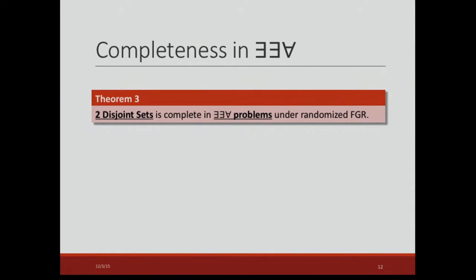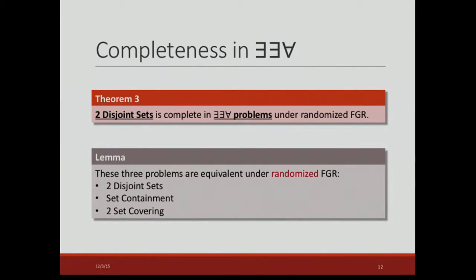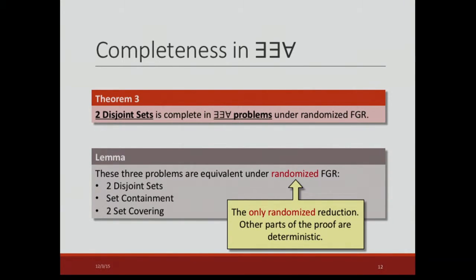Next, we mainly show the proof of theorem three. We prove theorem three from the following lemma: these three problems are equivalent under randomized fine-grained reductions — the first is two disjoint sets, the second is set containment, and the third is two-set covering. Note that this randomized reduction is the only randomized reduction; all other parts of our proof are deterministic.